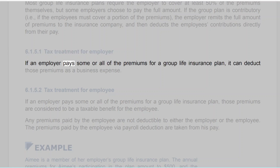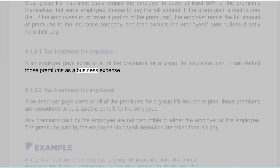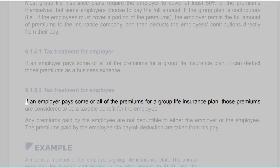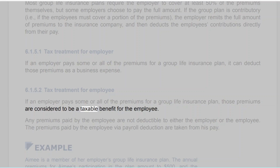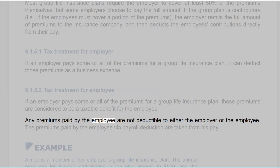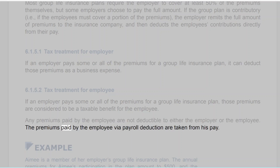If an employer pays some or all of the premiums for a group life insurance plan, it can deduct those premiums as a business expense. Additionally, those premiums are considered to be a taxable benefit for the employee. Any premiums paid by the employee are not deductible to either the employer or the employee. The premiums paid by the employee via payroll deduction are taken from his pay.